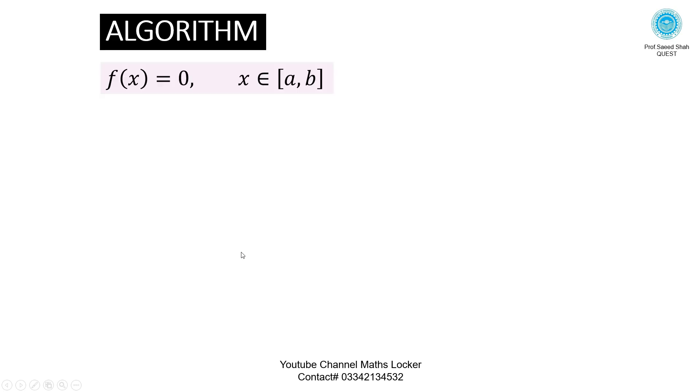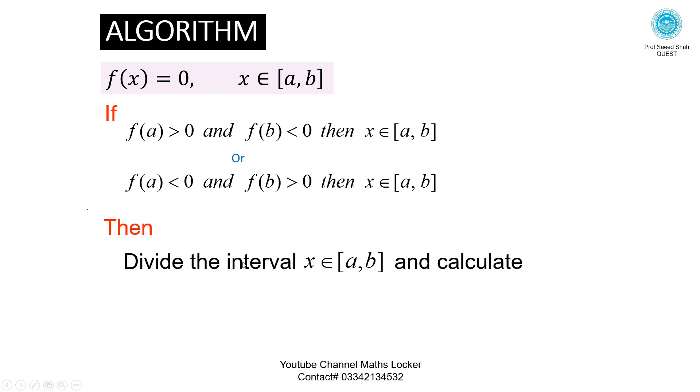Algorithm: F of X equals 0, X belongs to interval AB. If F of A times F of B is less than 0, then X belongs to interval AB. Divide the interval AB and calculate C equals A times F of B minus B times F of A, divided by F of B minus F of A, by this formula. Compute F of C.